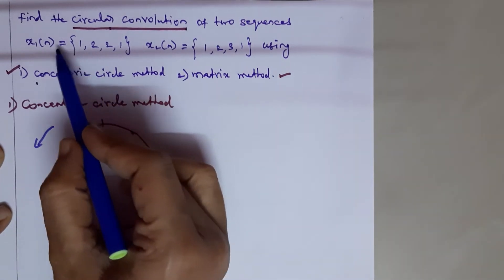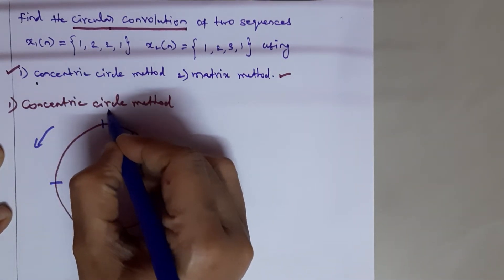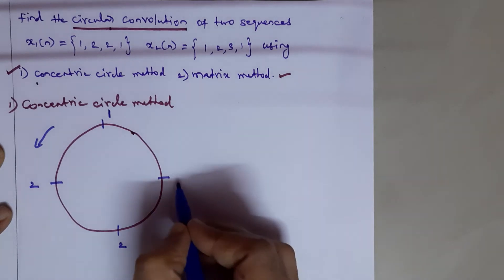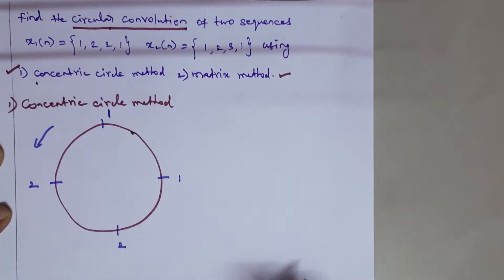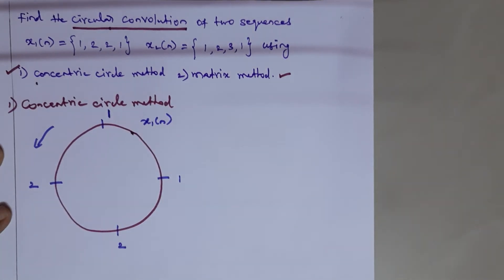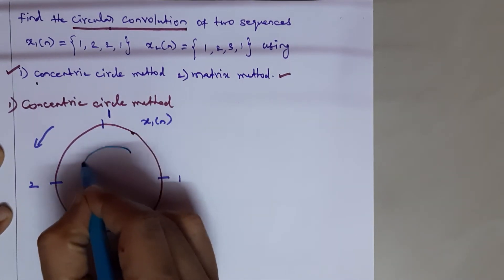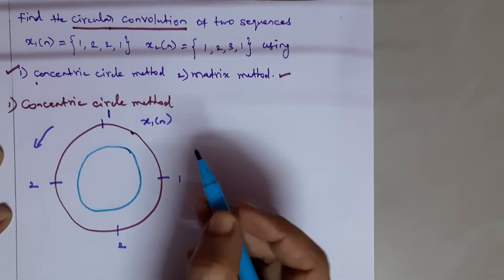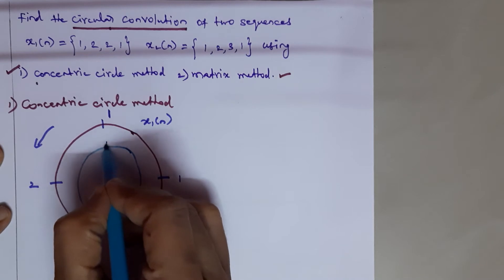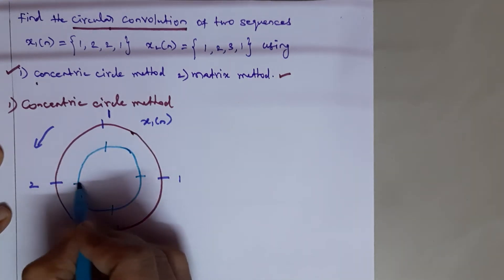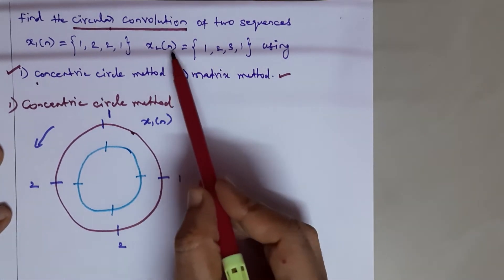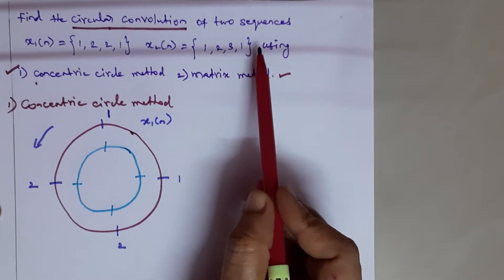Starting from one position, we write X1(n) values in anti-clockwise direction: the first value is 1, second is 2, third is 2, and fourth is 1. This outer circle represents X1(n). Similarly, we draw the inner circle, also divided into four equal points, and place the X2(n) values. X2(n) has values 1, 2, 3, 1.